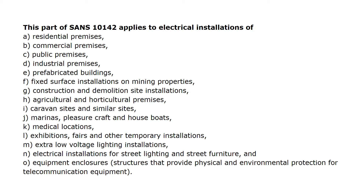G. Construction and Demolition Site Installations. H. Agricultural and Horticultural Premises. I. Caravan Sites and Similar Sites. J. Marinas, Pleasure Crafts and House Boats. K. Medical Locations. L. Exhibitions, Fairs and Other Temporary Installations. M. Extra Low Voltage Lighting Installations. N. Electrical Installations for Street Lighting and Street Furniture. O. Equipment and Enclosure Structures that provide Physical and Environmental Protection for Telecommunication Equipment.